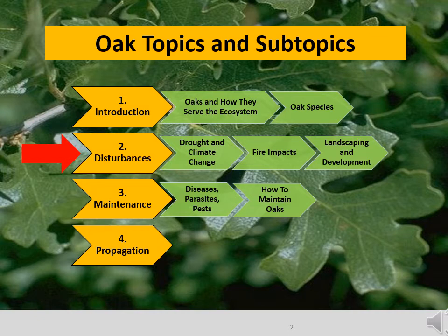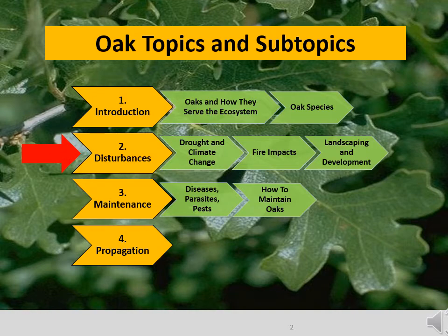In fact, low-intensity fires can be particularly helpful to oaks. We thought it would be a good idea to discuss some of the disturbances that are both common and likely, describe their effects, and list actions that a landowner can take to minimize any negative effects. We have divided the collection of disturbances into three subtopics: drought and climate change, fire, and landscaping and development.